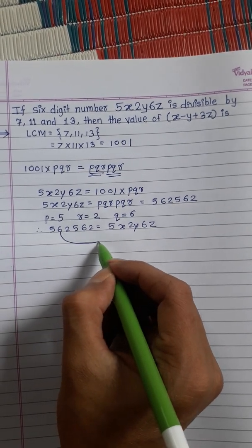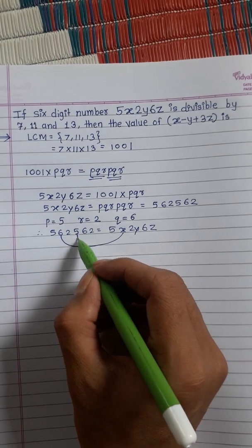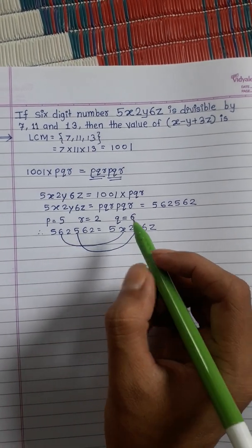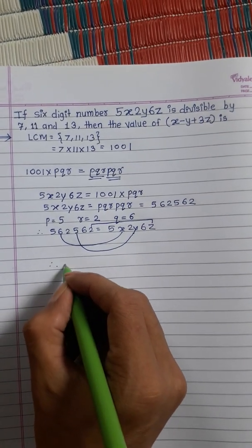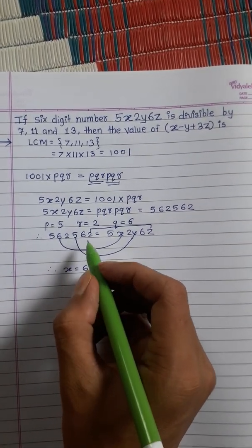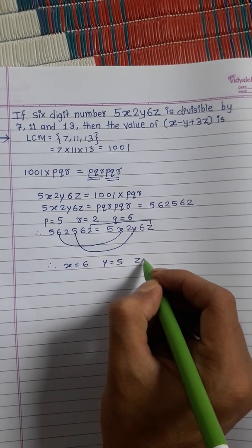Comparing them, this 6 is the value of x, this 5 is the value of y, and this 2 is the value of z. Therefore, x = 6, y = 5, and z = 2.